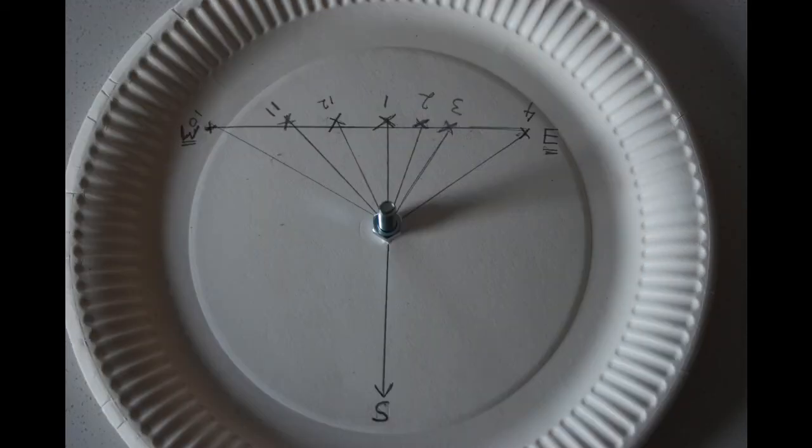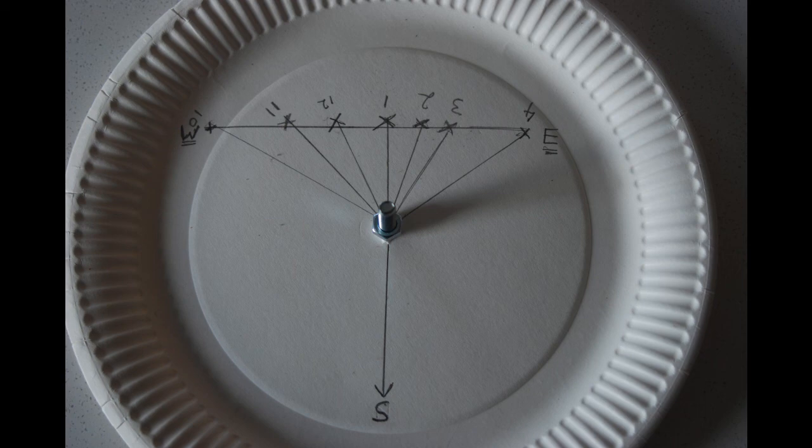One final thing. If you join all the dots up where the tips of the shadows have been, you will see that you get a straight line that runs from the west to the east. And this is true wherever you are in the world. If you have two shadow points and you join them up, they will always point east-west.